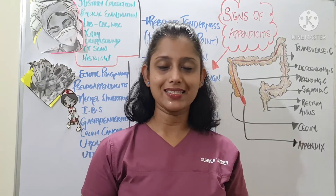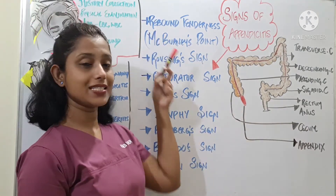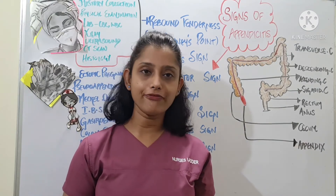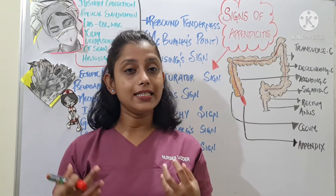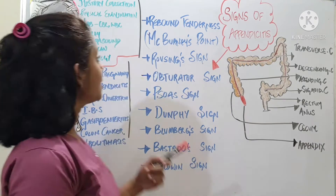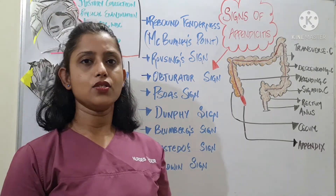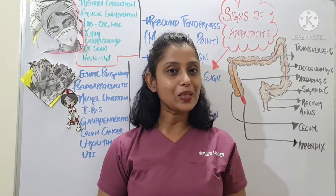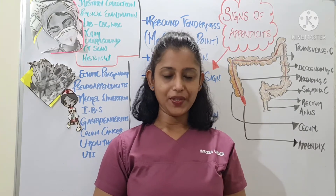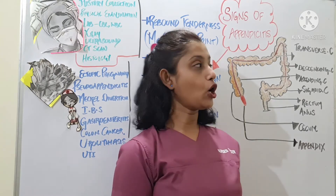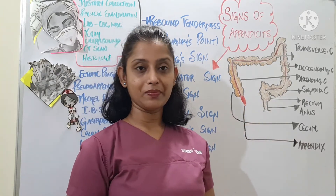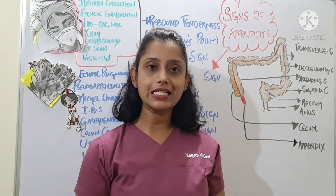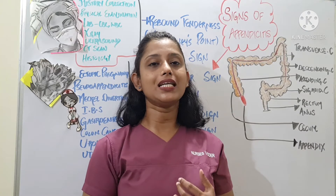Let us see the signs of appendicitis one by one. The first one is rebound tenderness, which is a pain felt after or as soon as a deep palpation is performed. Next is McBurney's point, which is located in the right lower quadrant. It is the point of attachment of appendix with the cecum, located two-thirds of the distance between the umbilicus and the anterior superior iliac spine.